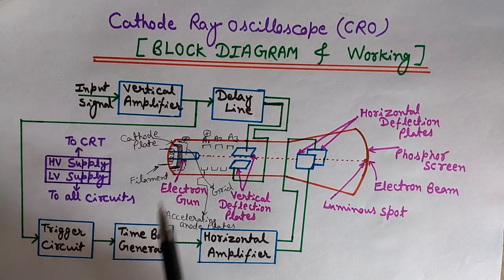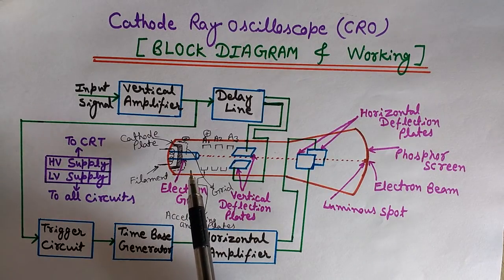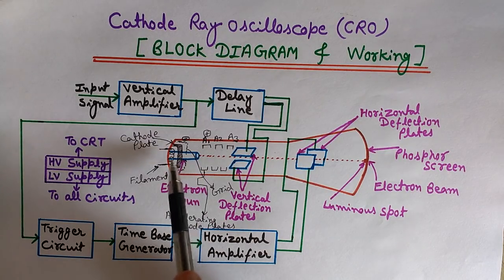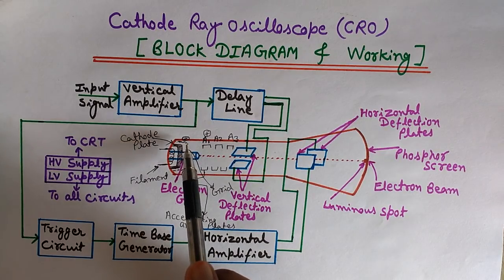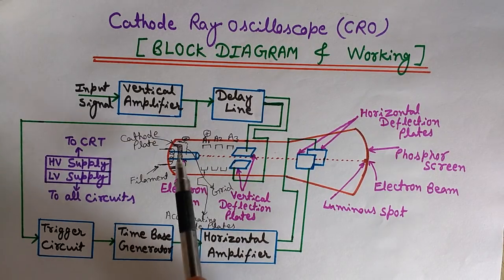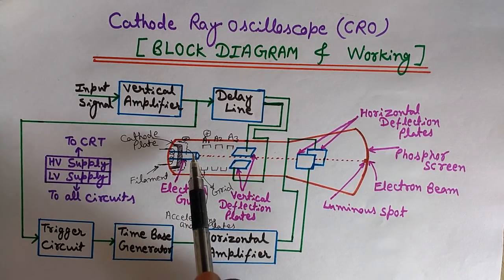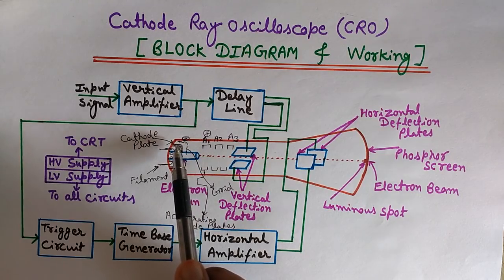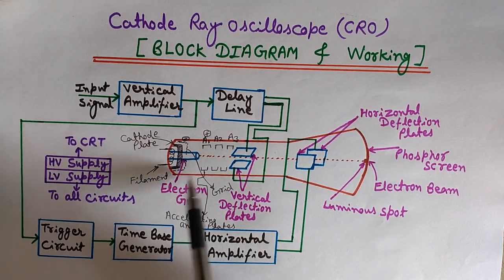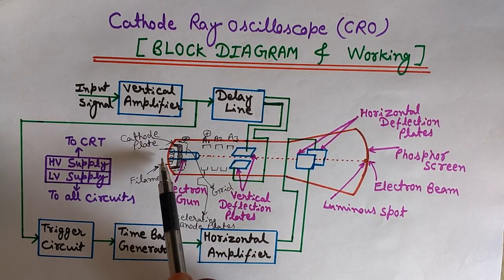We also have a grid here. We apply negative potential to this grid. The job of the grid is to control the number of electrons emitted through the electron gun. Whenever we decrease this negative voltage, the number of emitted electrons increases. If we increase this negative voltage, the number of electrons emitted will be reduced.